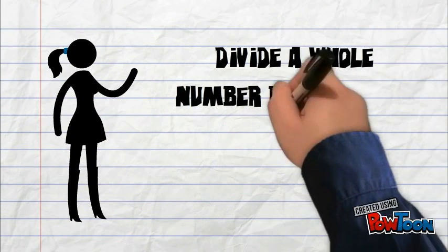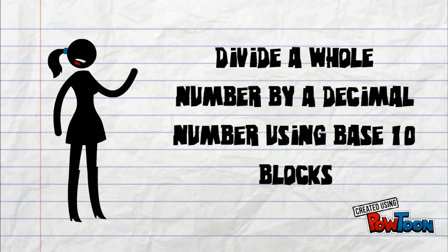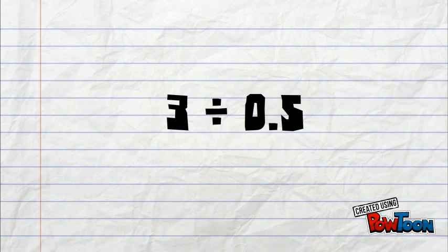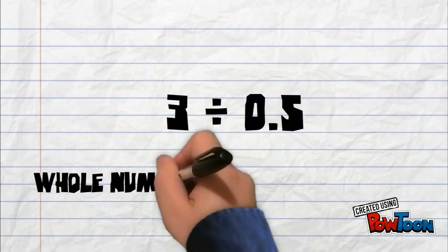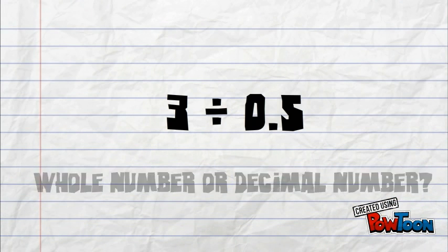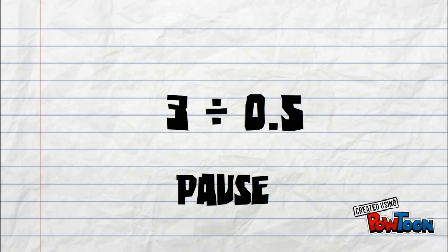I will now demonstrate how to divide a whole number by a decimal number using base 10 blocks. This is our first division. We have 3 divided by 5 tenths. Try to estimate. Do you think the answer will be a whole number or a decimal number? This is a great time to have a class discussion. Pause the video.